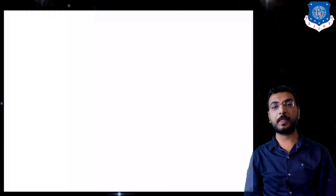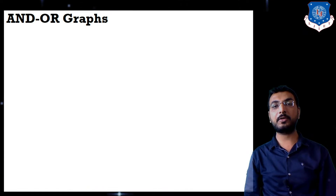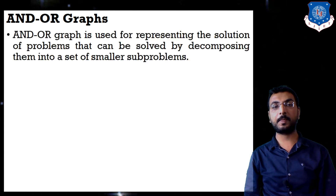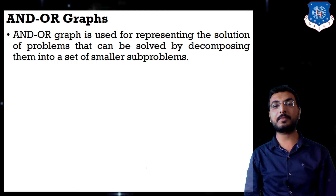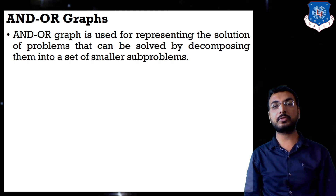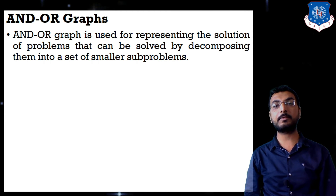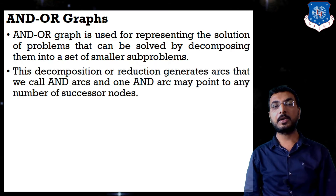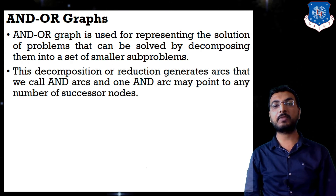Let us start with the AND-OR graph. AND-OR graph is used for representing the solution of problems that can be solved by decomposing them into a set of smaller sub-problems. Using AND-OR graph we divide our problem into sub-problems. This decomposition generates arcs called AND arcs, and one AND arc may point to any number of successor nodes.